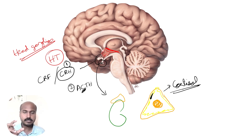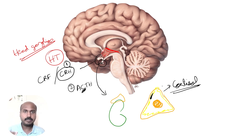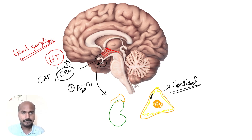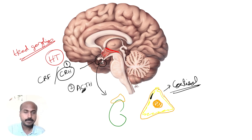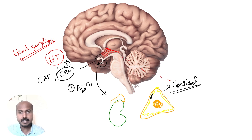On a stress response, the HPA axis activates the release of cortisol from the cortex of the adrenal gland. Cortisol is a glucocorticoid — a product of the adrenal cortex — and it will negatively inhibit the release of CRH.